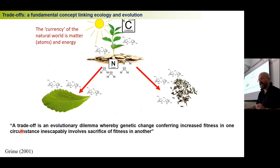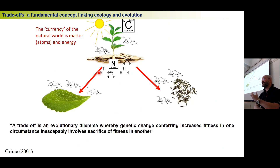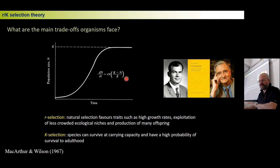We have a definition of a trade-off by the ecologist Philip Grime: a trade-off is an evolutionary dilemma whereby genetic change conferring increased fitness in one circumstance inescapably involves sacrifice of fitness in another. The plant can invest in one thing but not the other. This is perhaps the main thing that links ecology and evolution. Now, there are some equations in this course but the important thing for today is to understand what's happening in this curve and this graphical representation.